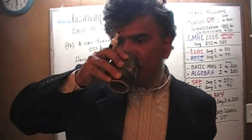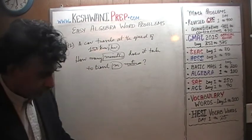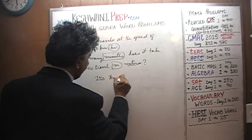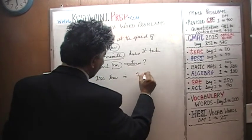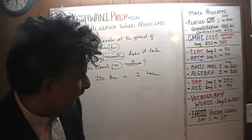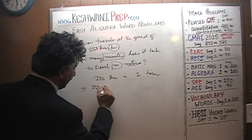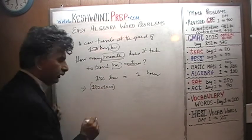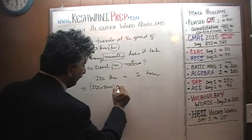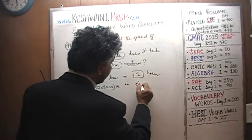Here we go. What do we know? We know that we can go 150 kilometers in one hour. Convert your units right away — that implies we can go 150 times 1,000 meters in one hour, because there are 1,000 meters in a kilometer. One hour is the same as 60 minutes.